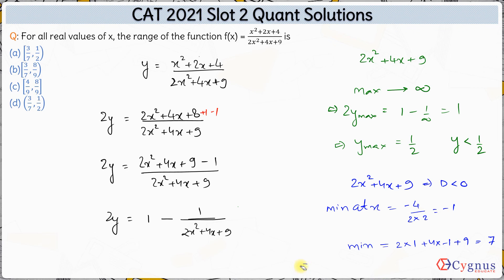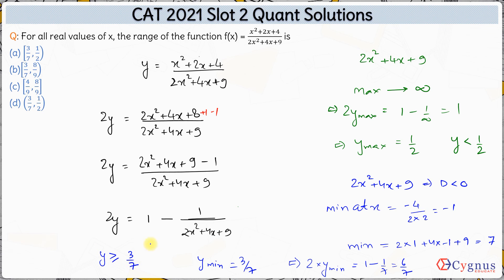So 2y_min = 1 − 1/7 = 6/7, which means the minimum value of y is (6/7)/2 = 3/7. This is a closed bracket because the quadratic can attain its minimum value of 7. Therefore, y ≥ 3/7. Combining both results, y is greater than or equal to 3/7 but strictly less than 1/2. Hence the correct answer is option A.